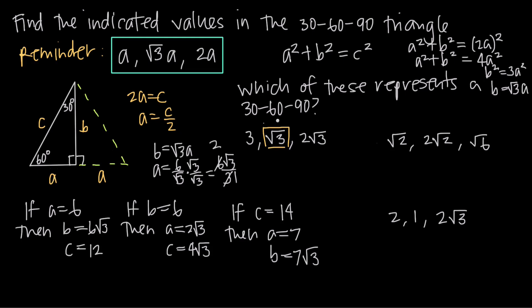So √3 must be side A. The hypotenuse has to be double this value, which would be 2√3 — and we see that in the set. The longer leg, side B, must be the shortest leg multiplied by √3, so √3 times √3 equals 3. That checks out, so these three side lengths do in fact represent a 30-60-90 triangle.